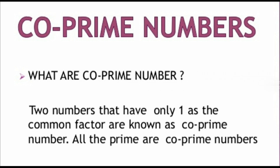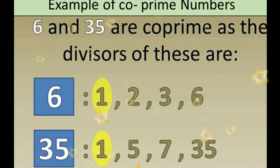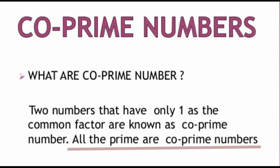The third term is co-prime numbers. When we take two numbers and take out the factors of these two numbers and we have only 1 as a common factor, those numbers are called co-prime numbers. For example, taking 6 and 35: factors of 6 are 1, 2, 3, and 6; factors of 35 are 1, 5, 7, and 35. Only 1 is common, so 6 and 35 are co-prime numbers. As a shortcut, all prime number pairs are also co-prime — for example, 3 and 5, 5 and 7, 11 and 13, 19 and 23.